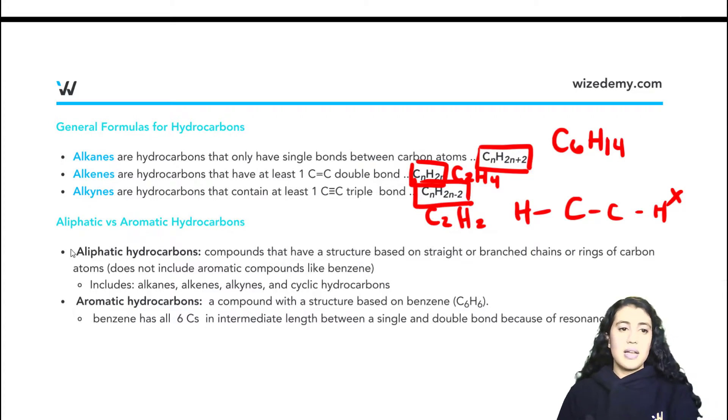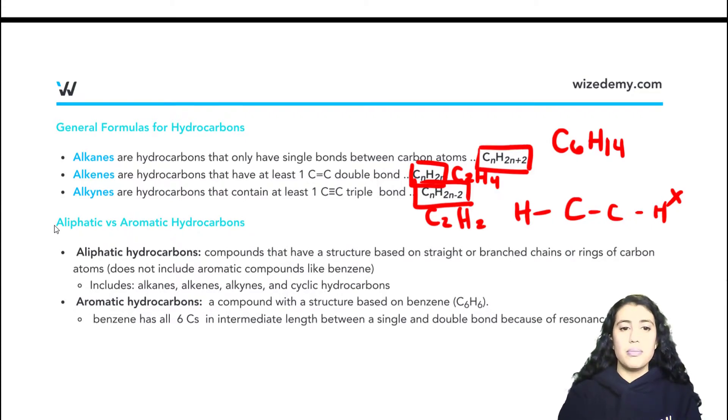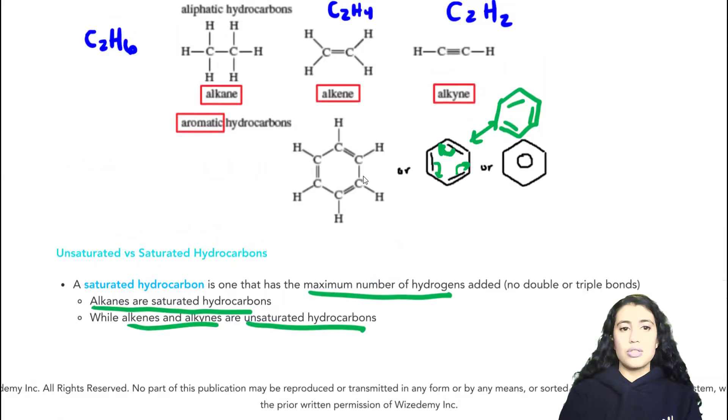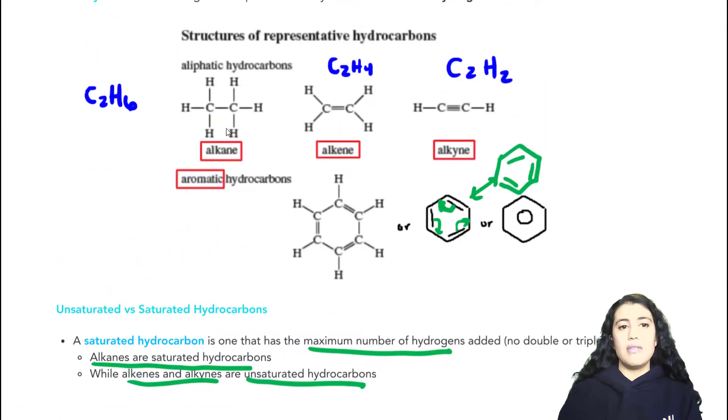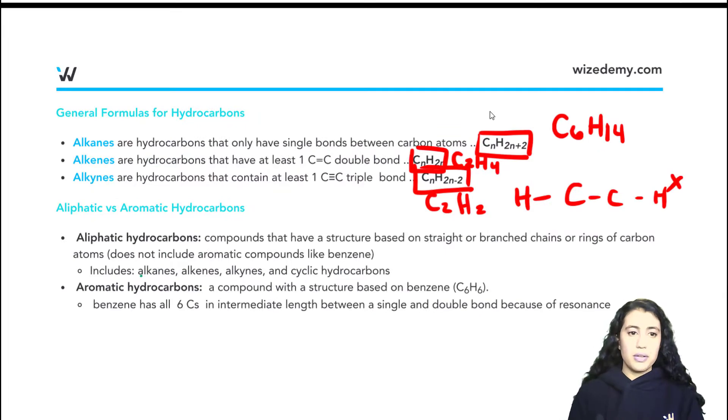And finally, the last terms to understand is aliphatic versus aromatic, which we mentioned. So aromatic is specifically referring to something that is resembling this benzene ring, and aliphatic are any of these hydrocarbons aside from the aromatic ones. So your alkanes, your alkenes, and your alkynes. These down here includes alkanes, alkenes, alkynes, and another one is cyclic hydrocarbon.